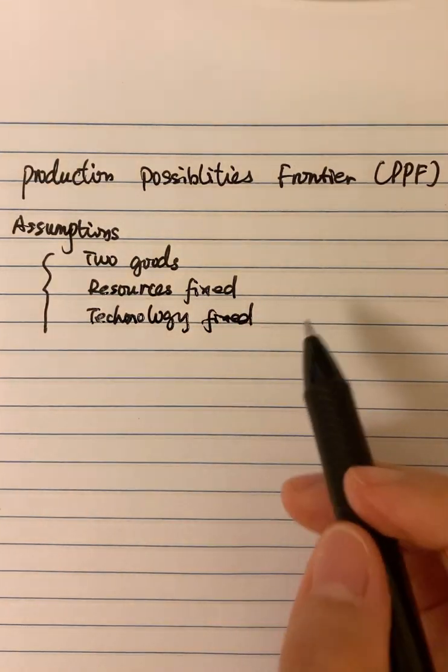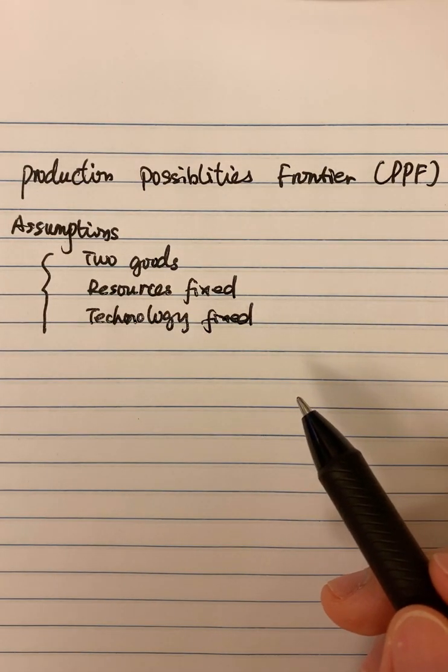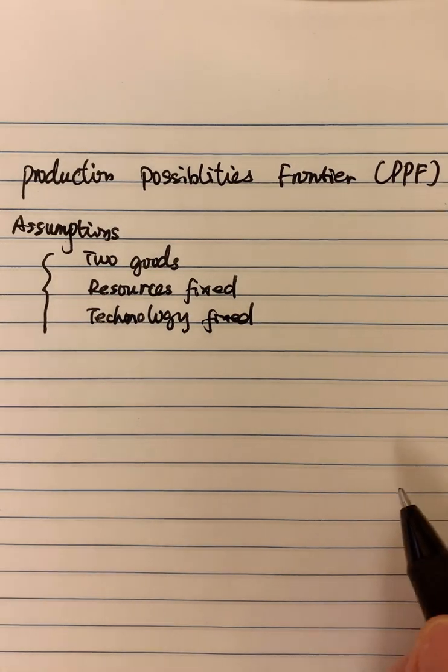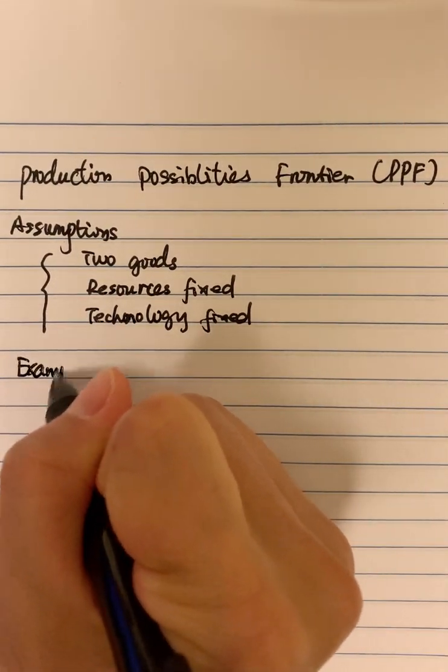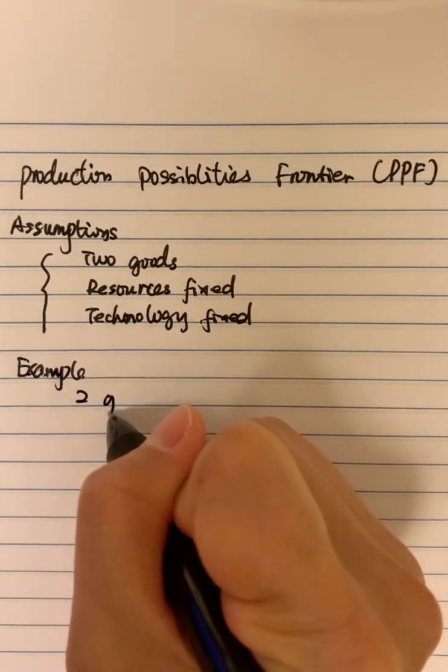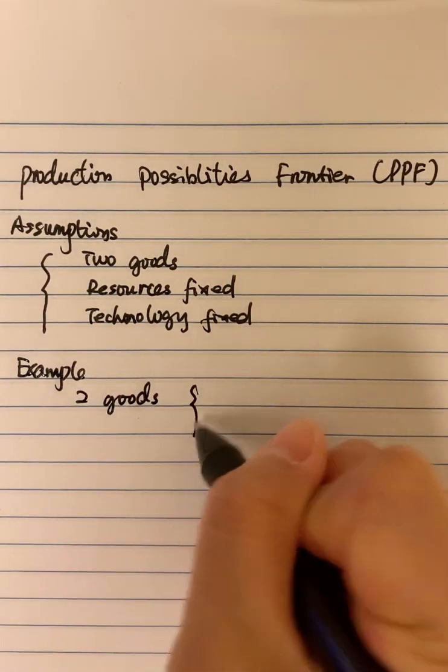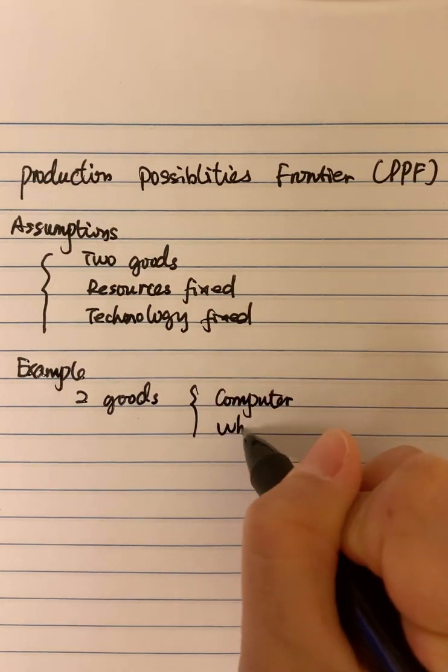So I would like to talk about this PPF through an example. This example is actually on our slides. We assume there are only two goods - we have computer and we have wheat.